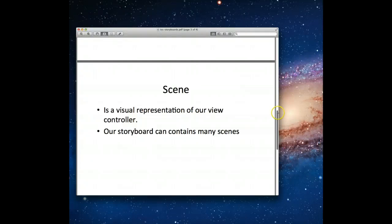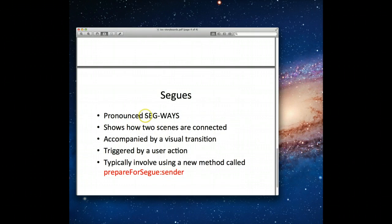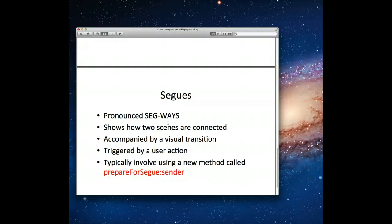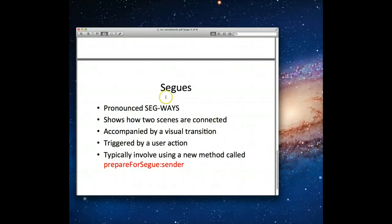The different view controllers of the different scenes are connected using something called segues. I've tried to phonetically break this down because I've heard some mispronunciations — it's pronounced 'segways,' very much like the Segway device. Segues essentially show how two scenes might be connected, and they're typically accompanied by some kind of visual transition — it could be a slide up or a page curl effect. They're also typically triggered by a user action, like touching a row or a button. When working with segues, we make use of a new method called prepareForSegue:sender: which allows us to detect when a segue needs to occur.